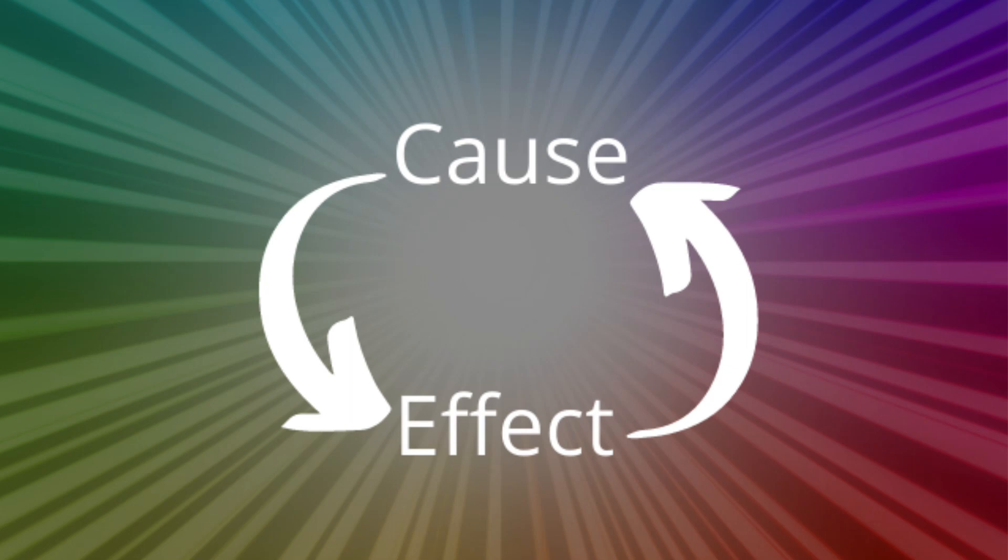Hail ordinarily falls in a strip from 10 to 20 kilometers wide and up to 40 kilometers long. A hailstone is usually less than 8 centimeters in diameter. However, hailstones can be much bigger than that.